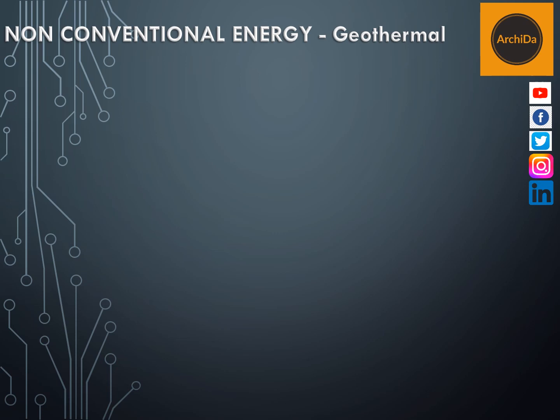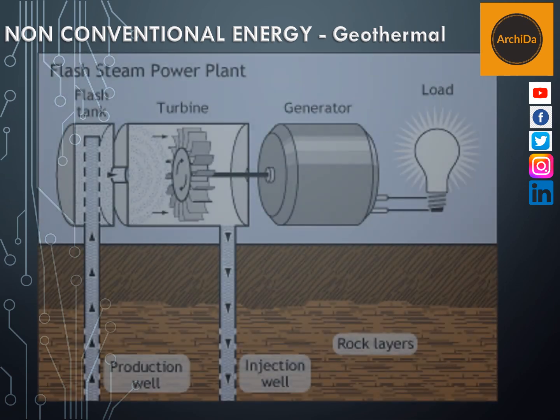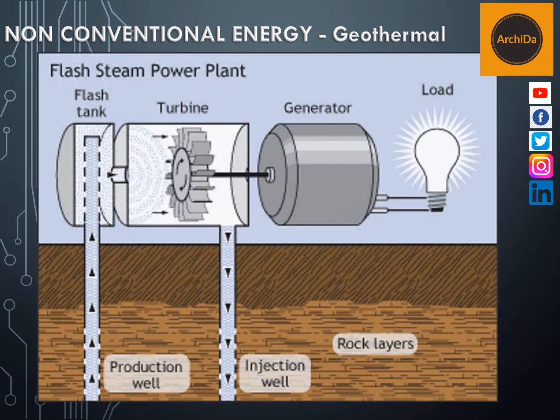Another variation of a geothermal plant, which is the most common, is called the flash steam power plant. This gets the water from underground, and as it goes up, it becomes steam. That steam is then used to turn the turbine, which in turn turns the generator.